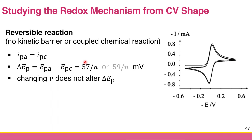The third criterion is that changing the scan rate does not change the ΔEp of a reversible reaction. Here is an example of a reversible CV — the anodic and cathodic peak currents are equal in size, and the peak positions are very close to each other, around 57/n mV apart. This is the first type: the reversible reaction.